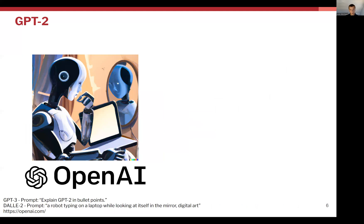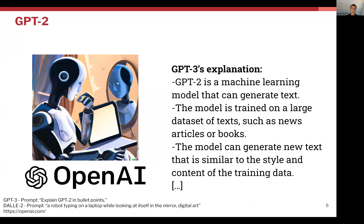Next, GPT-2. Since everybody is talking about GPT-3 right now, I thought I would have GPT-3 explain what GPT-2 is. GPT-2 is a machine learning model that can generate text. It was trained on very large corpora of data containing text from news articles or books, and the model is very good at generating text, especially when that text falls within the domain it was trained in.